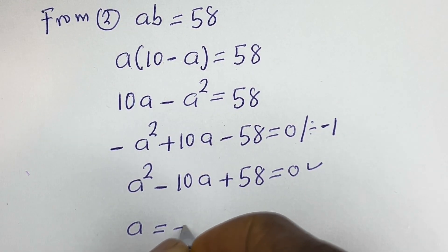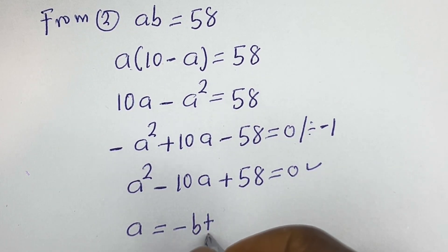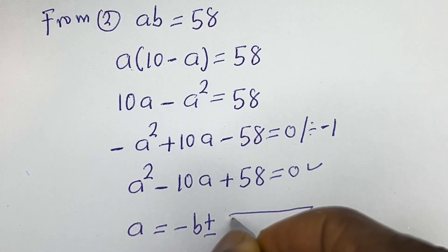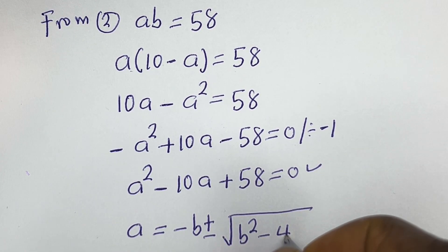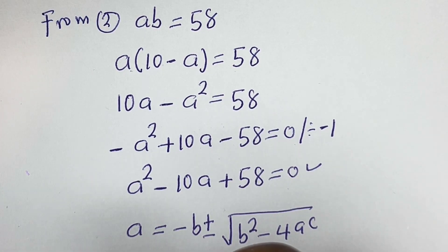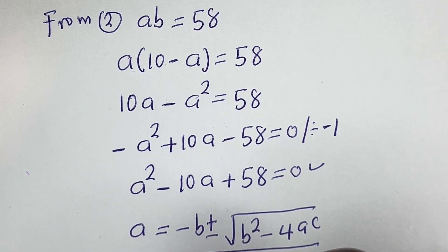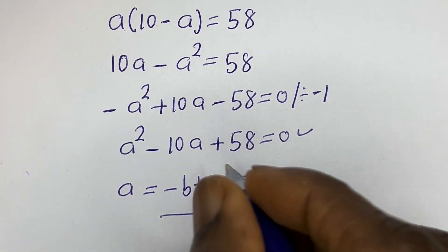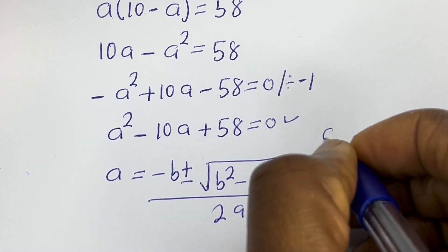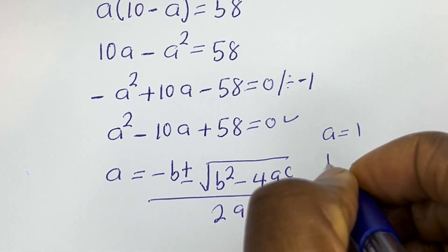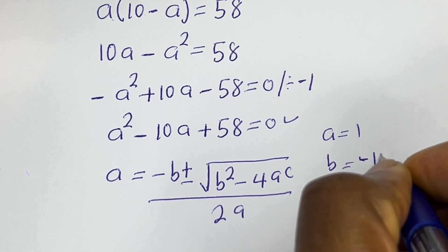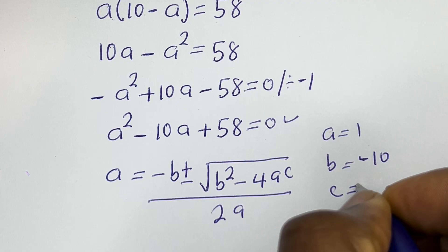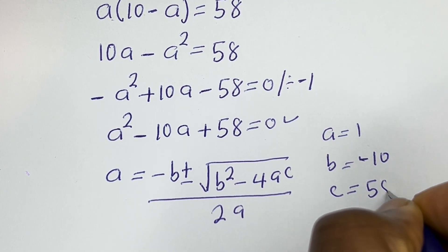Let's solve this using the quadratic general formula: a is equal to minus b plus or minus square root of b squared minus 4ac, all over 2a. From this equation, a equals 1, b equals minus 10, and c equals 58.